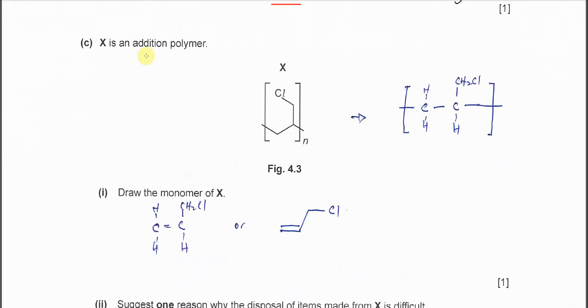Part C: X is an addition polymer. To get the monomer from this polymer, you identify the main backbone. If you identify this main backbone, you break this bond, break this bond, add a double bond, add the pi bond here to form a double bond.